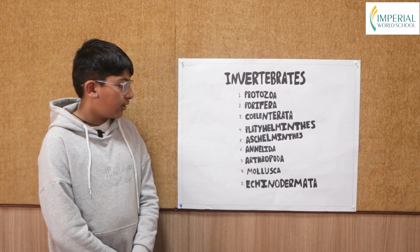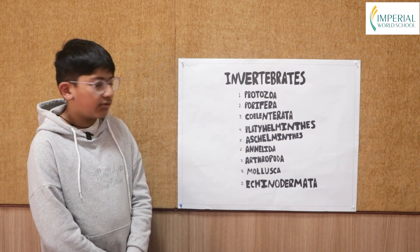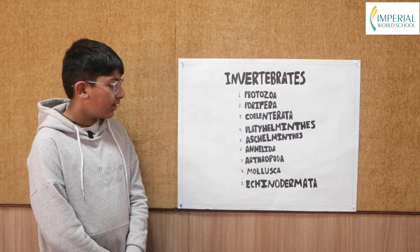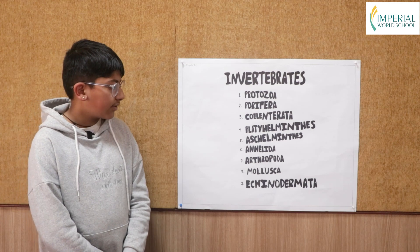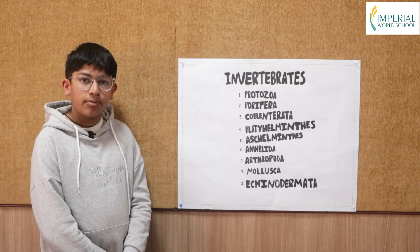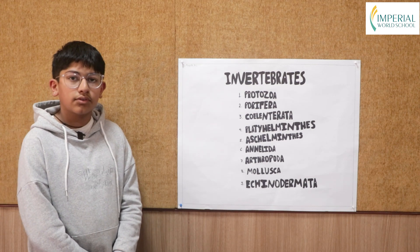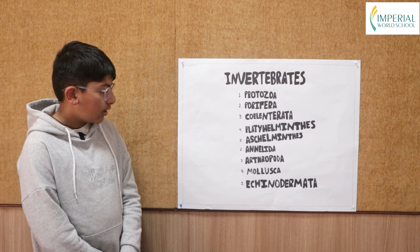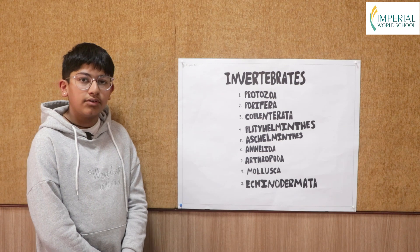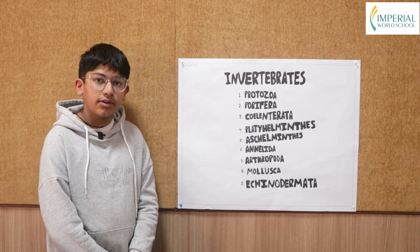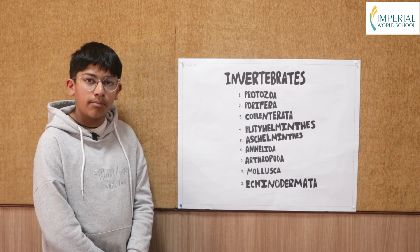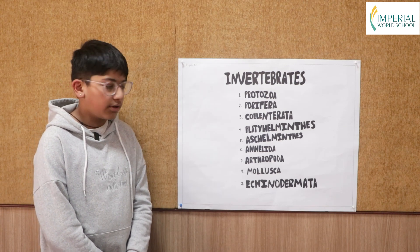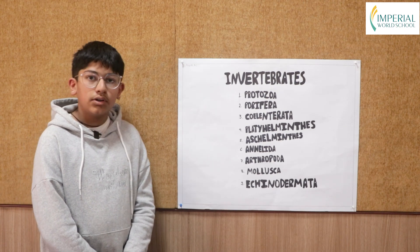In Arthropoda, we have species that have jointed legs. An example of Arthropoda is a spider. In Mollusca, we have species that have a hard shell around their body to protect themselves. One example is an octopus.